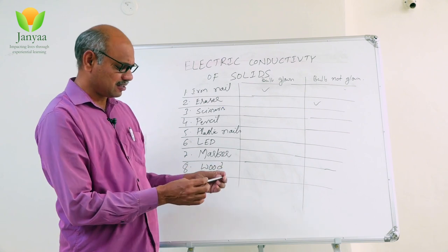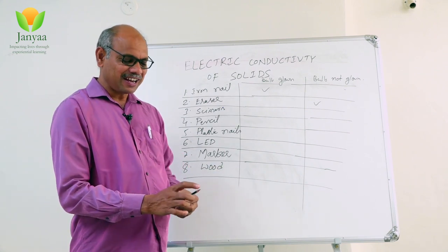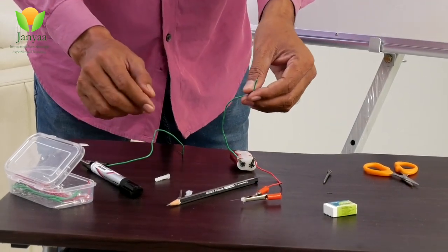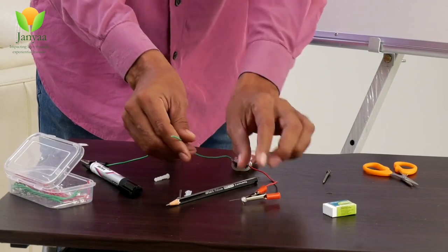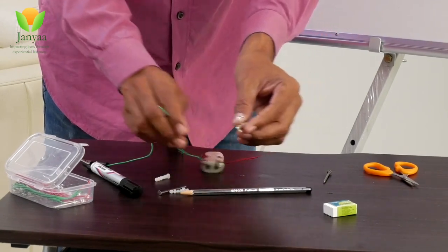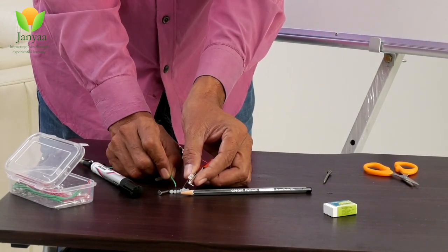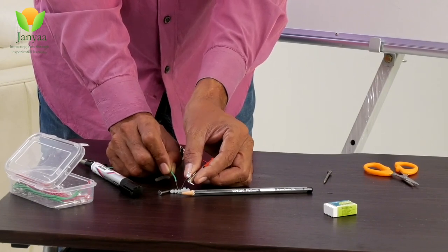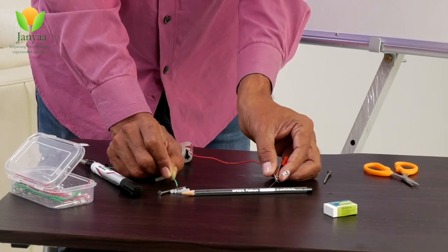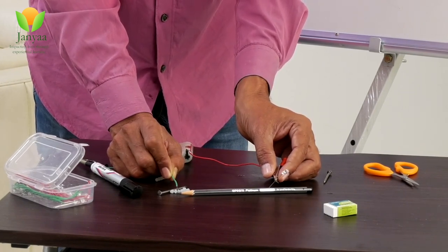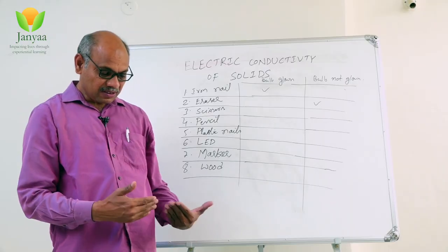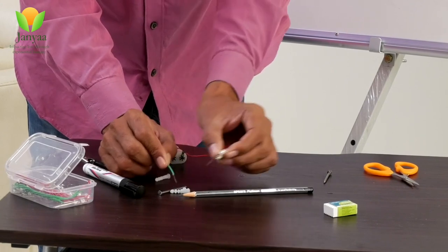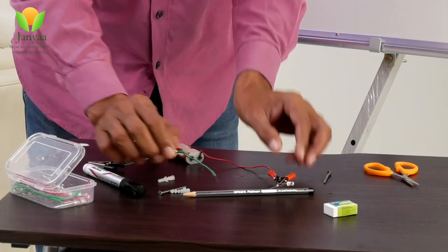Now let us use the pencil. A pencil has two parts: the graphite lead and the wood. If you connect only the lead to the circuit, the bulb glows. But when you connect through the wood part, the bulb does not glow. That means the graphite lead allows current to pass through it, but the wood does not allow current to pass through.